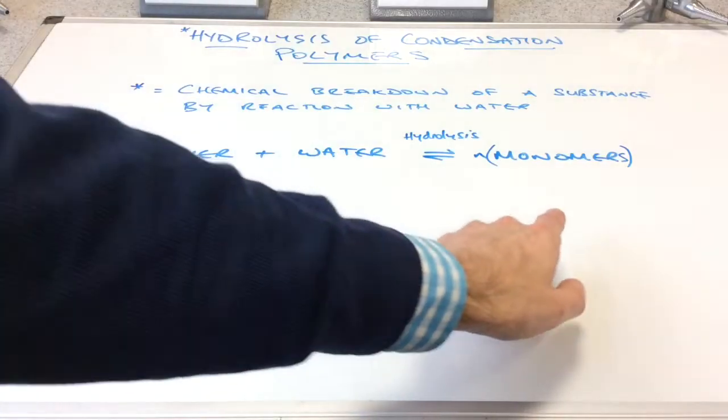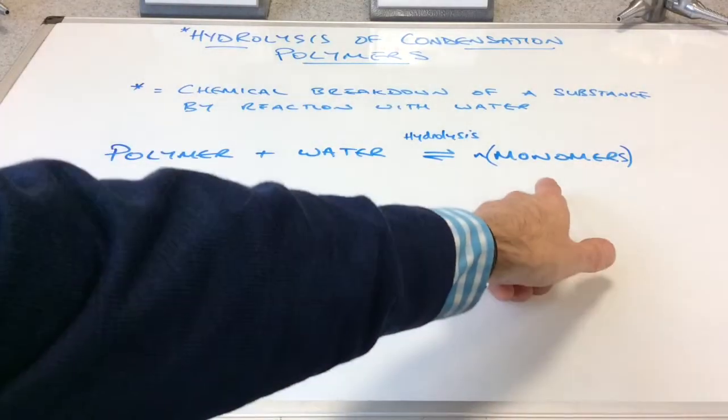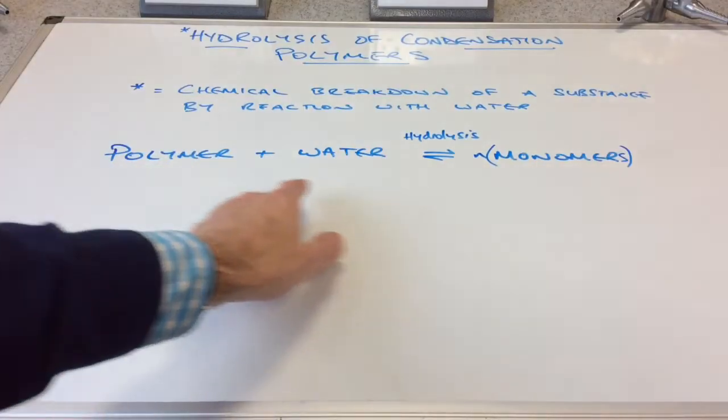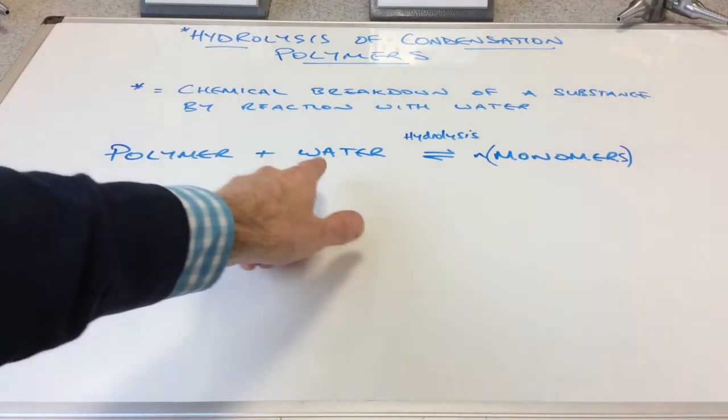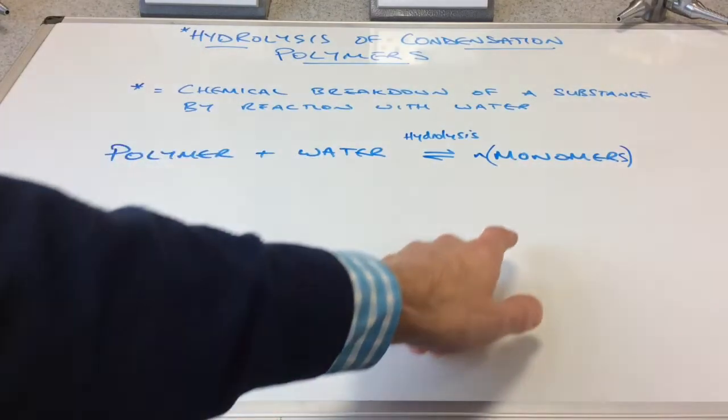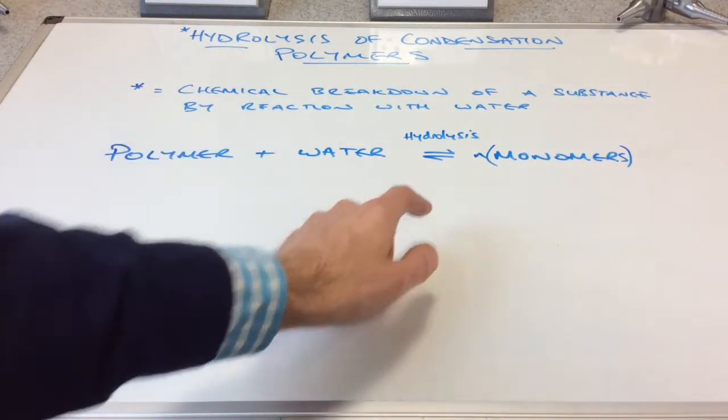So what do we call the reverse process? If we take N monomers and join them together to make the polymer, and we also make a water molecule for each combination, well that's condensation.